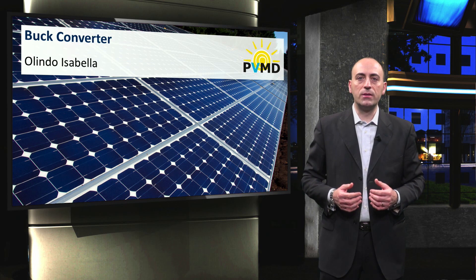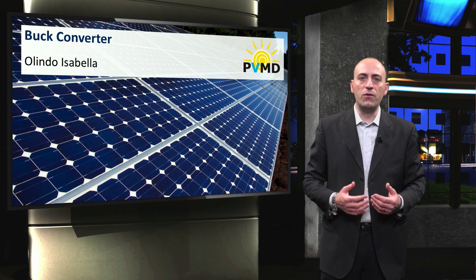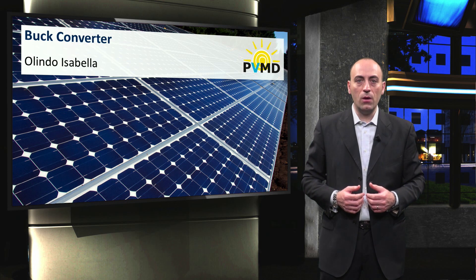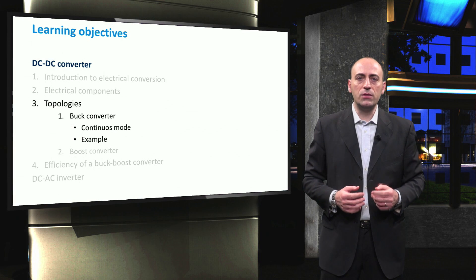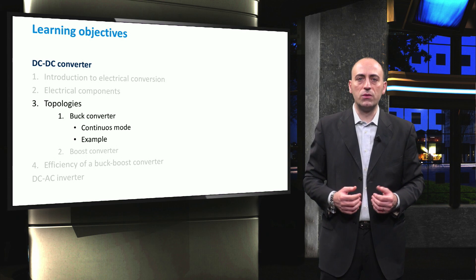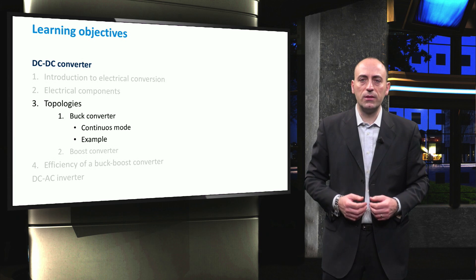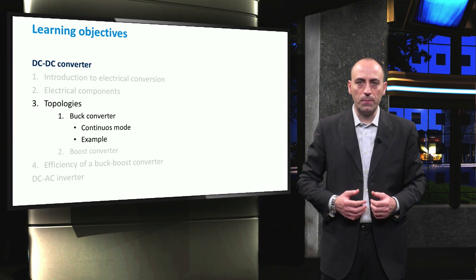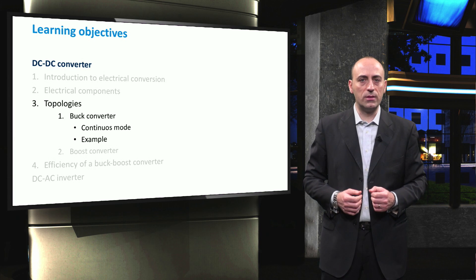Now that we know the basic components needed for DC to DC power electronics, we can start with the first and simplest topology, which is the buck converter, also called the step-down converter. Its role is to decrease the DC voltage coming from the PV side to a more suitable one. In this video, we will show you its electrical circuit and the operation in continuous mode. After the theory, we shall present a simple example to better understand it.